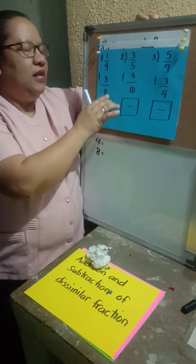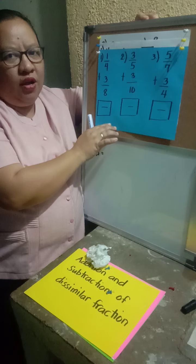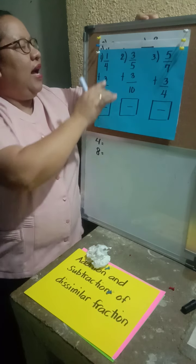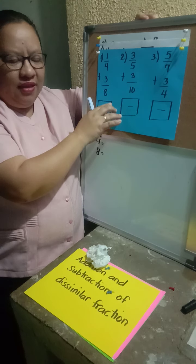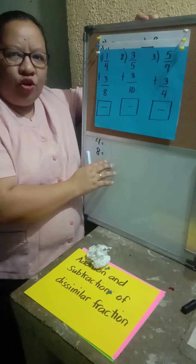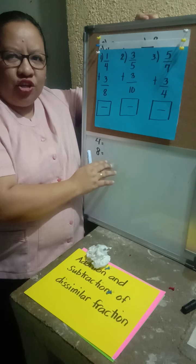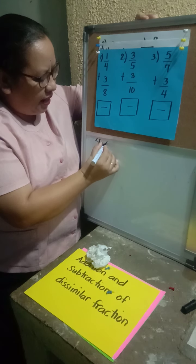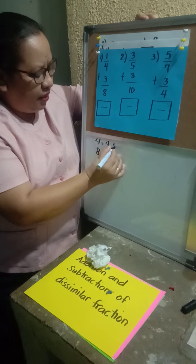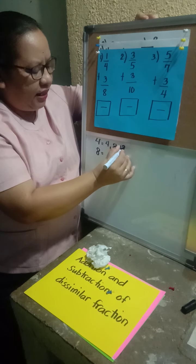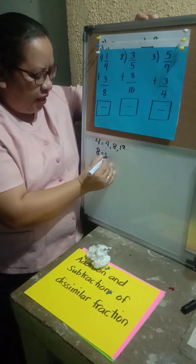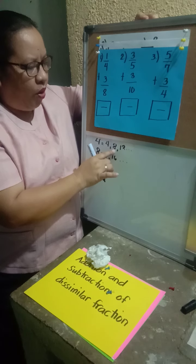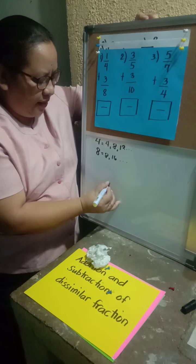What are the rules for changing dissimilar fractions to similar fractions? First, get the LCD, divide, then multiply to make them similar fractions. To find the LCD, write the multiples of the denominators, then find their least common denominator. For 4: 4, 8... and for 8: 8, 16... We already have 8.